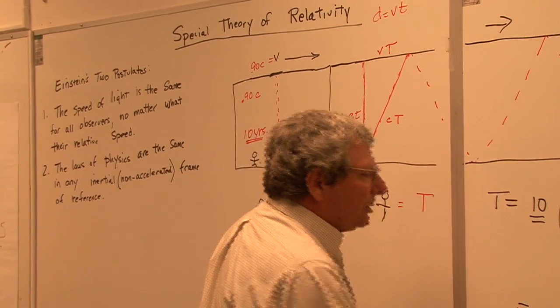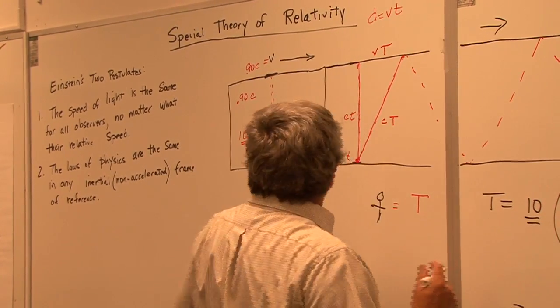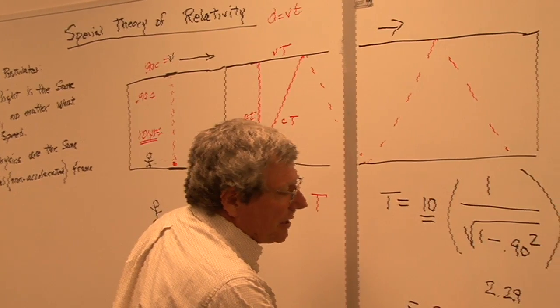So therefore, the observer time would end up to be not 10 years, but it'd be 22.9.